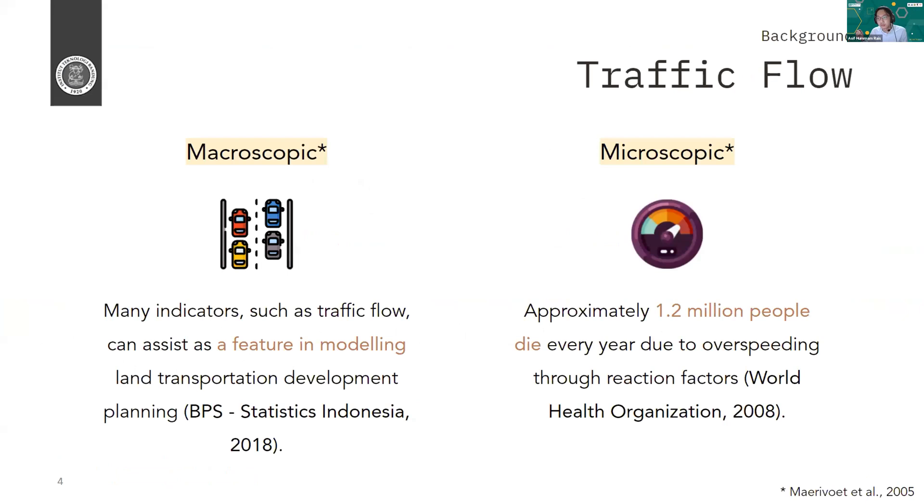Okay, so traditional methods use inductive loop detector, which is automatic but intrusive. Or the second one is speed gun, which is manual and can only detect one vehicle at a time. Here we focus on using computer vision, which is automatic and non-intrusive.